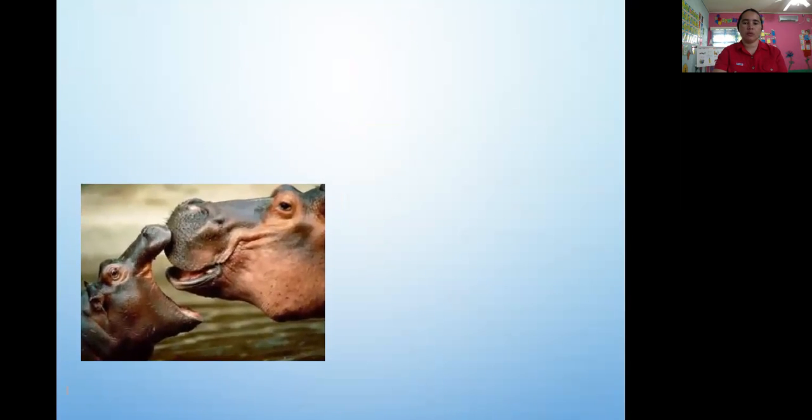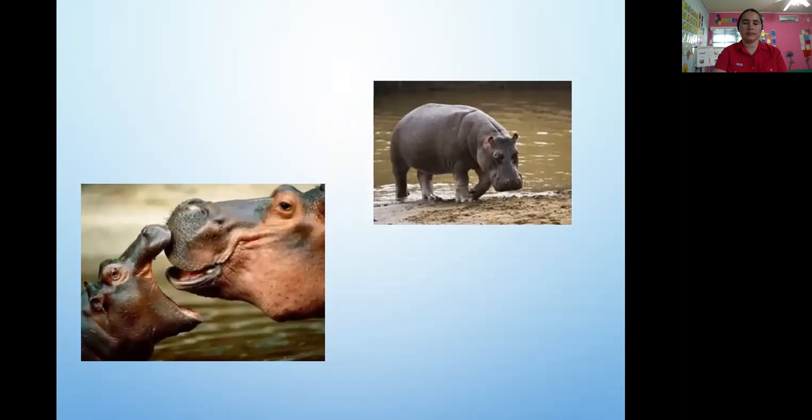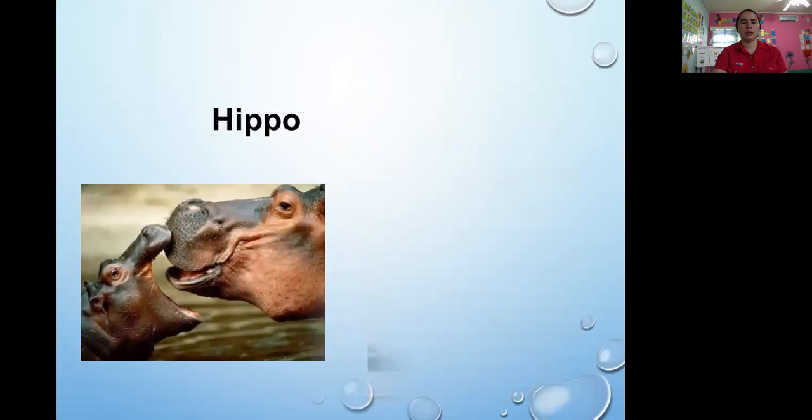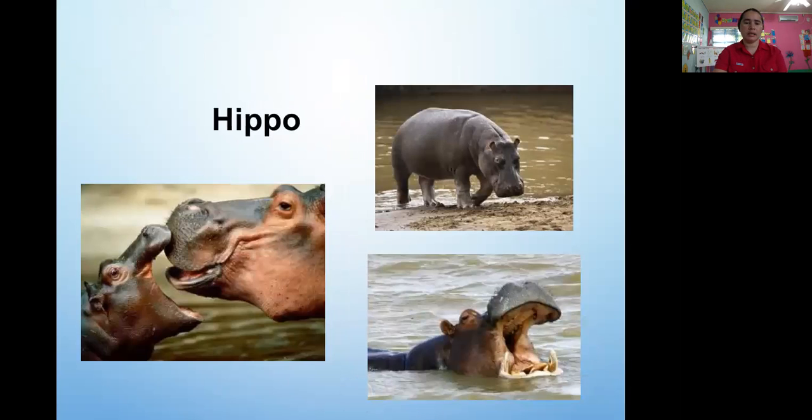The first wild animal I have here is a hippo. What do hippo eat? Well, they eat grass and plants that grows in the water. And also, they like to play in the water and they like to be in the water. Some of them be under the water.